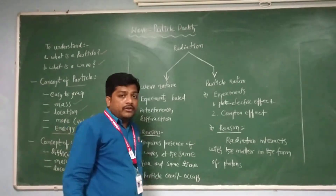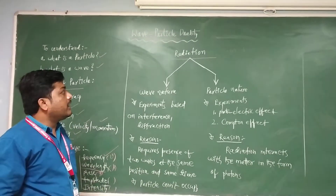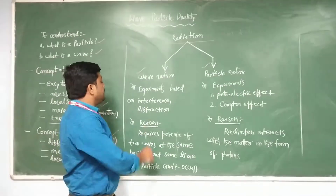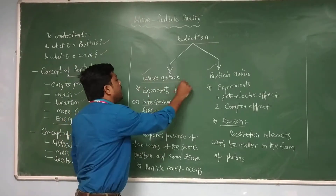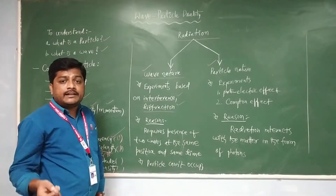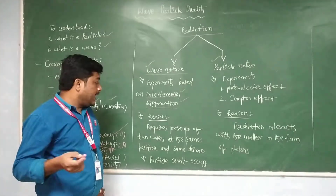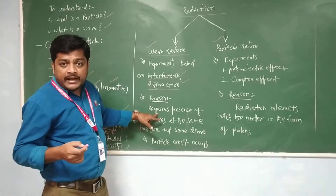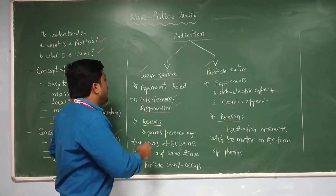Our concept is wave-particle duality. The radiation — for example, light — sometimes behaves like a wave and other times behaves like a particle. Experiments based on interference and diffraction indicate that radiation behaves like waves, because these experiments require two waves at the same place at the same time. We cannot locate two particles at the same place and the same time, but we can locate two waves at the same time and the same place. So these experiments reveal that radiation behaves with wave nature.